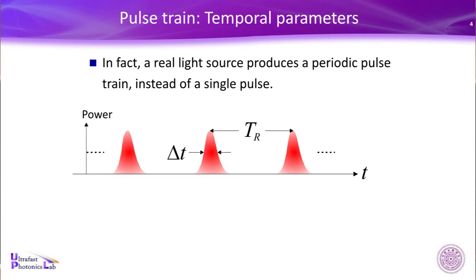Some definitions about short laser pulses. In fact, a real light source produces a periodic pulse train instead of a single pulse. So if you buy an ultrafast laser, you turn it on, you cannot get a single shot. You got a periodic pulse train, just like this. This is a time axis. The vertical axis means laser power. So you can see periodic pulses.